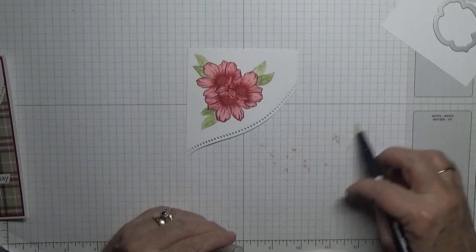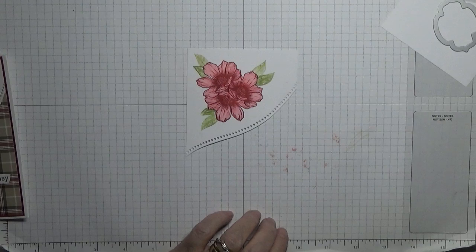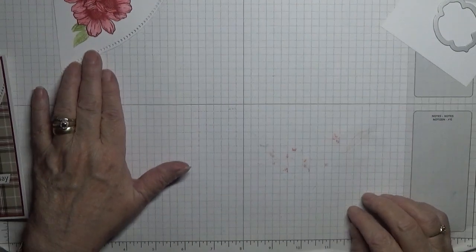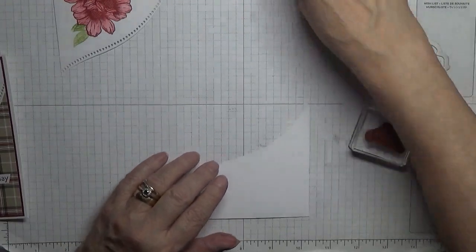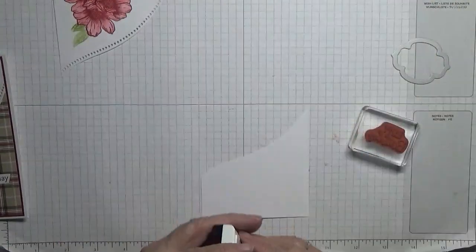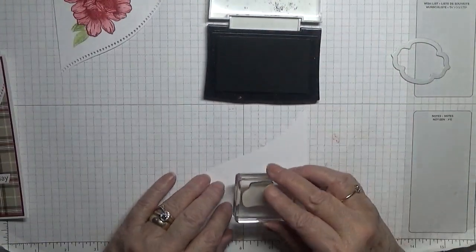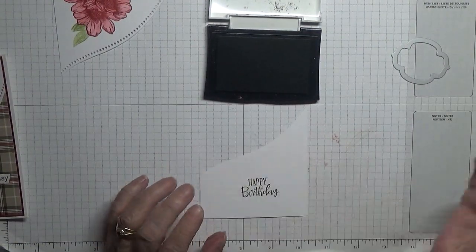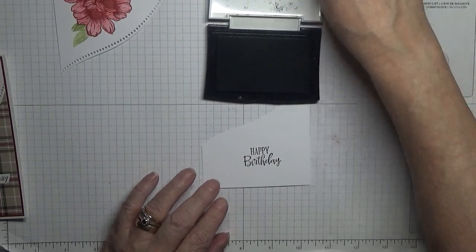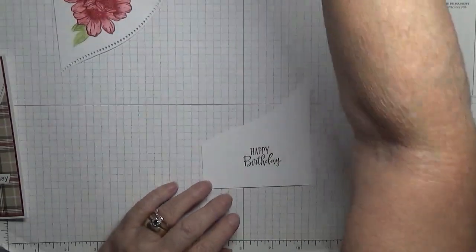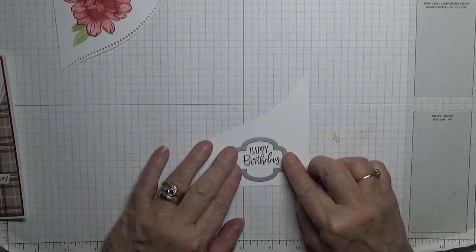Depending on how much ink is on each petal will depend on how dark the petal is. So there we are. There is our flower done, cleaning off my pen nice and clean. We'll put that to one side to dry. Now we need to stamp our Happy Birthday, and this is in black, and stamp that right in the middle because that's going to be cut out.